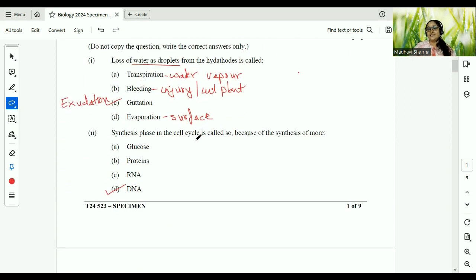Second one, the synthesis phase in the cell cycle is called so because of the synthesis of more DNA. Full form of DNA, deoxyribonucleic acid. And RNA is only ribonucleic acid. Just for information.